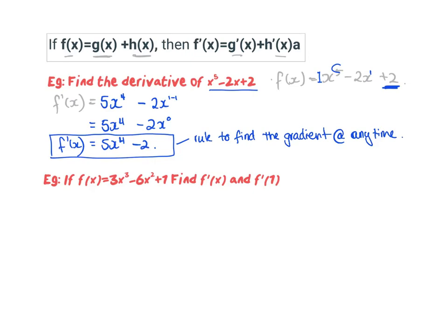Looking at the next one, finding the derivative function f'(x): it's going to be 3 times 3, so that's 9, and then I reduce the x power by 1 giving 9x squared. Then for the next term, 2 times negative 6 is negative 12, and I reduce the power by 1 giving x to the power of 1. So the derivative function for this rule is 9x squared minus 12x.